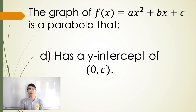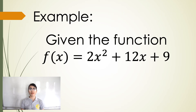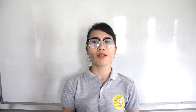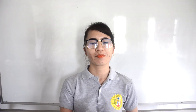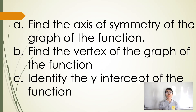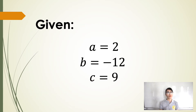For example, given the function f of x is equal to 2x squared plus 12x plus 9, we are looking for: a, the axis of symmetry of the graph; b, the vertex of the graph; and c, the y-intercept. First, identify the values for a, b, and c. So we have a is equal to 2, b is equal to 12, and c is equal to 9.